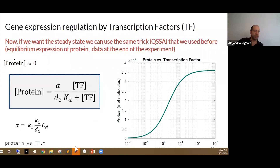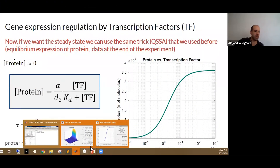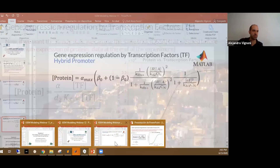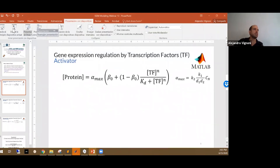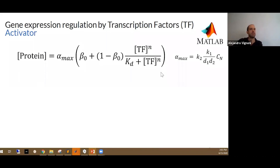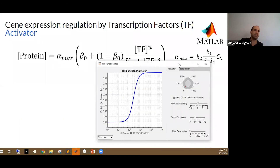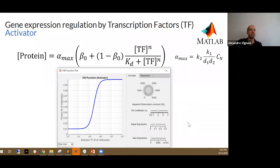Let me show you very quickly what I had in mind for the third part, which we were not able to do because it took more time than I expected. If we have an improved version of the Hill function that I showed you before, I have this MATLAB app that is in the repository that you can play with. It tells you the values of the parameters — the Kd — you can change it and see how that affects the shape of the Hill function.